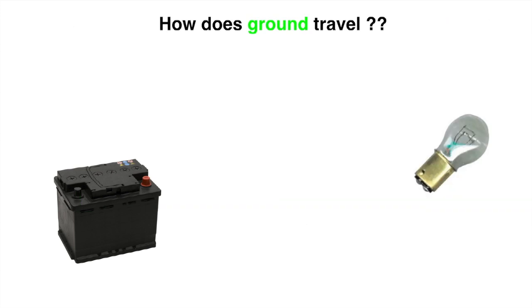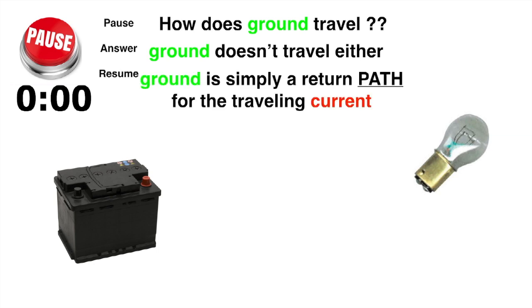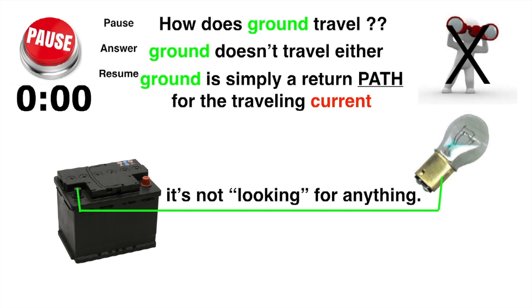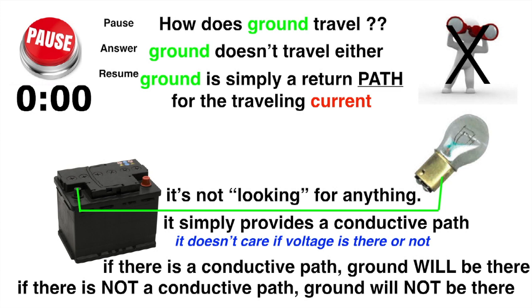Next question. How does ground travel? Pause it and think about that now for a second. How does ground travel? Well ground doesn't travel either. Ground is simply a return path for the traveling current. Ground is not looking for anything. It simply provides a conductive path and it doesn't care if voltage is there or not. If there is a conductive path, ground will be there. If there is not a conductive path, ground will not be there.